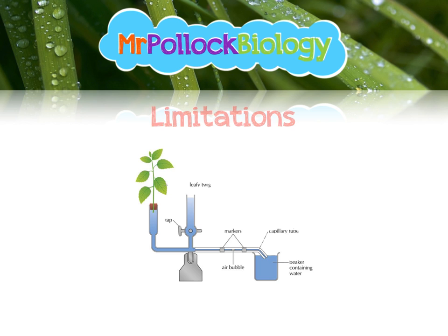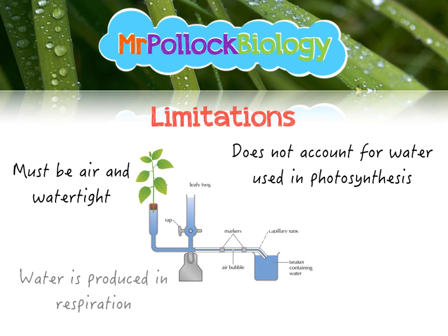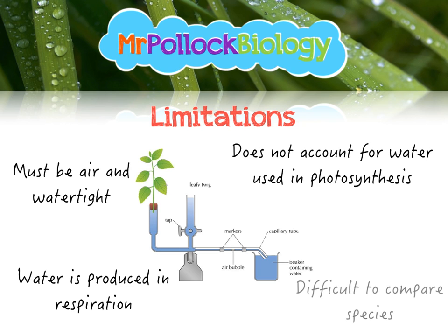This piece of equipment does have some limitations. It doesn't account for any water that's been used up in photosynthesis. It's got to be airtight and watertight to make sure nothing is escaping. Also, water is produced in respiration, which skews results a little. It's also quite difficult to compare different species because you need the same leaf surface area, and even then they might have different numbers of stomata. As long as you understand that we measure the movement of the air bubble to determine the volume of water being transpired through the leaves.